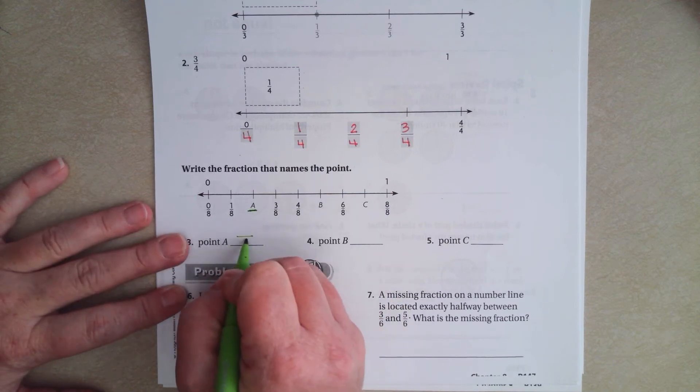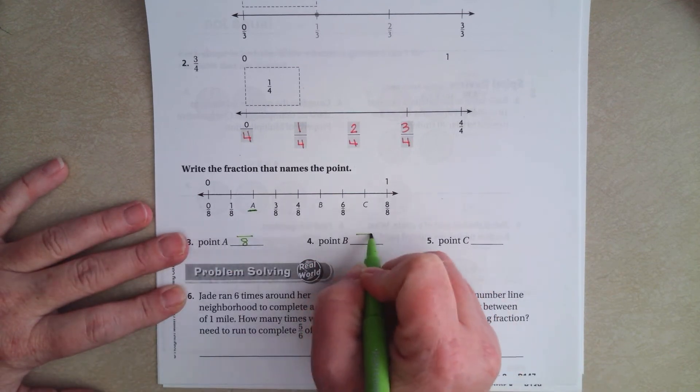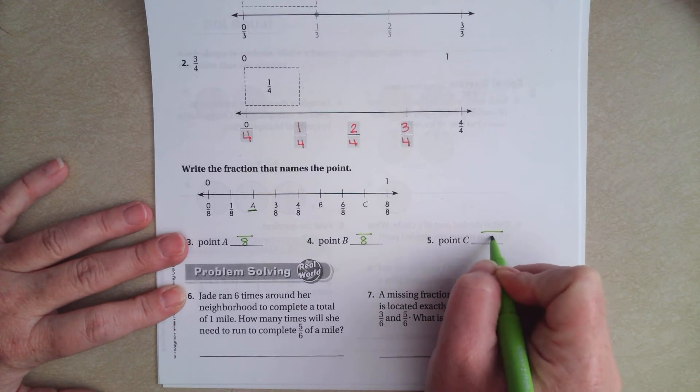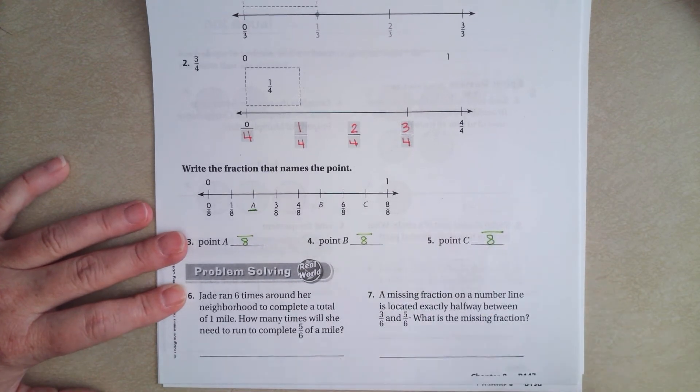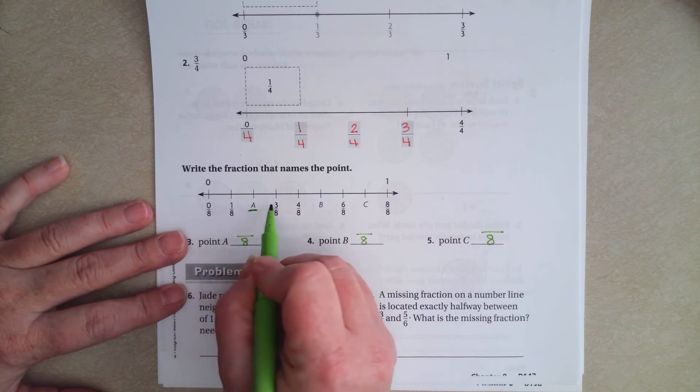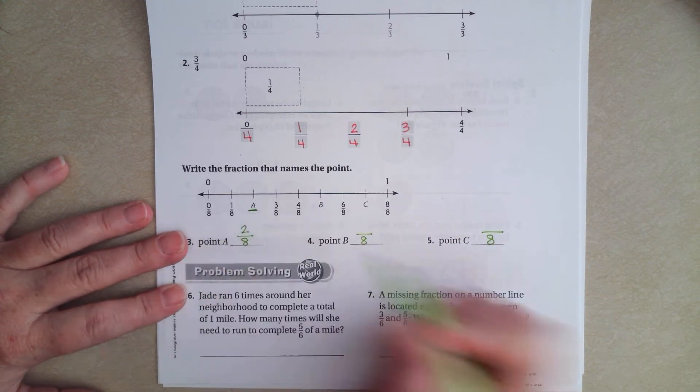In between that, we know our denominator is going to be 8 on all of these, no matter what. All of them are eighths. Now, in between 1 and 3, there's 2. It's pretty easy, guys.